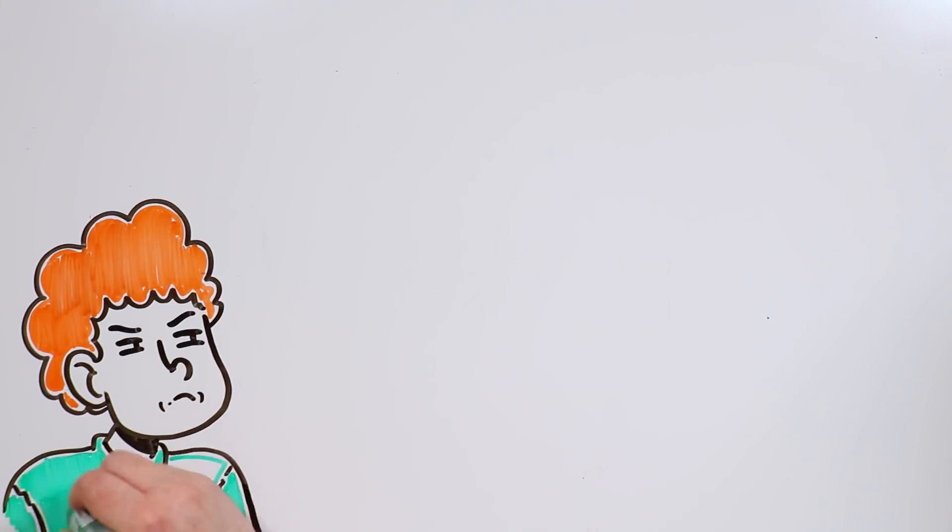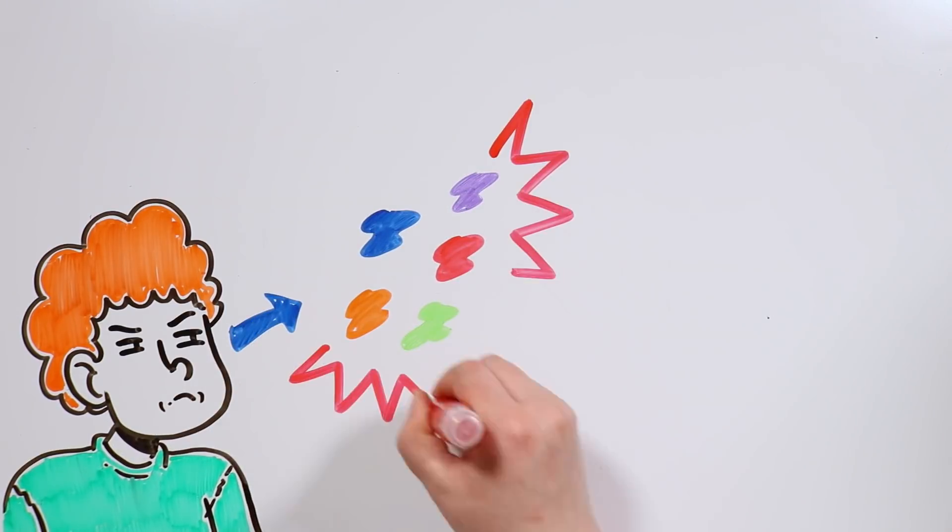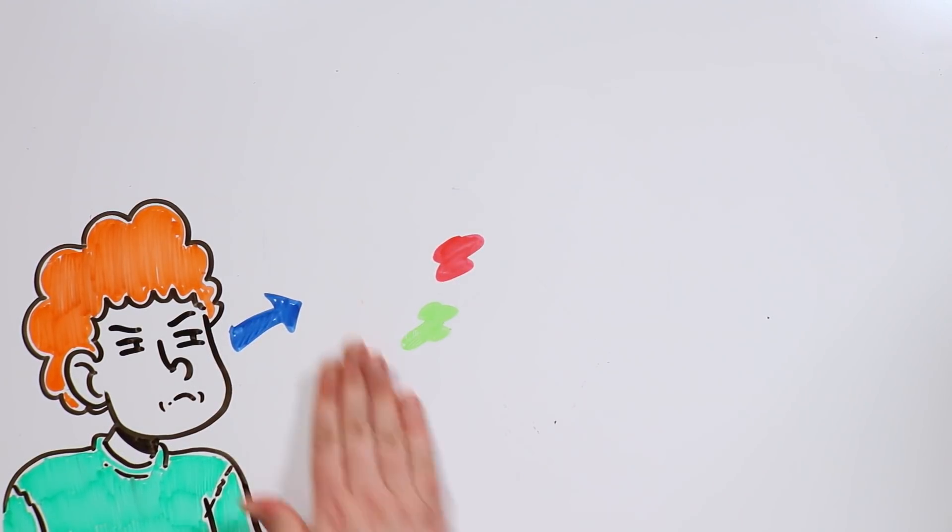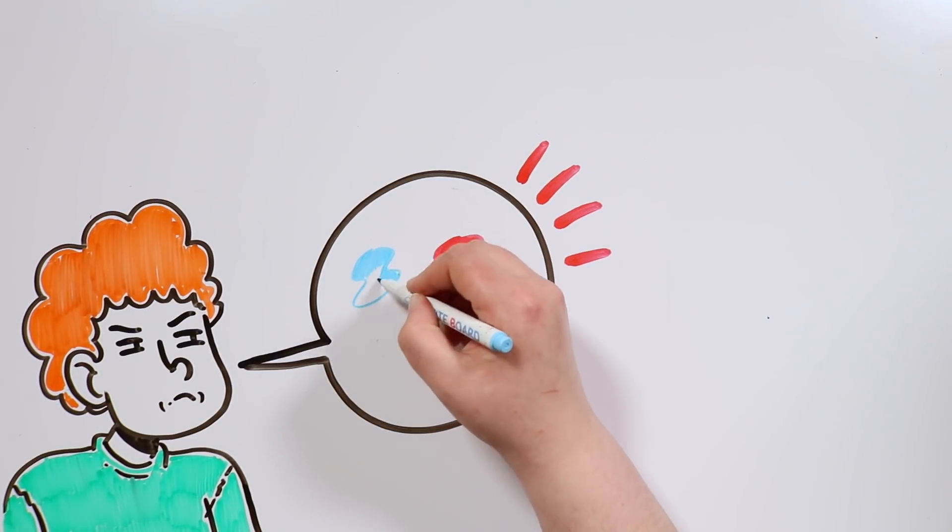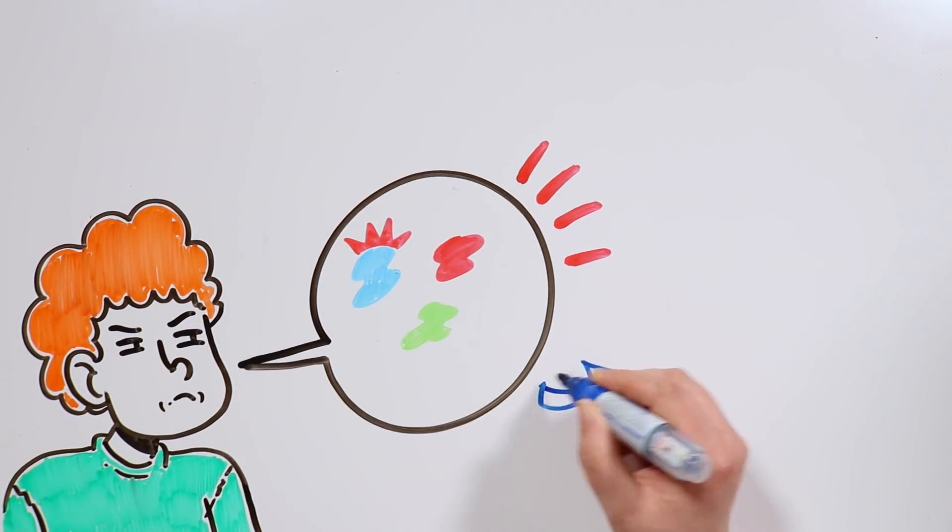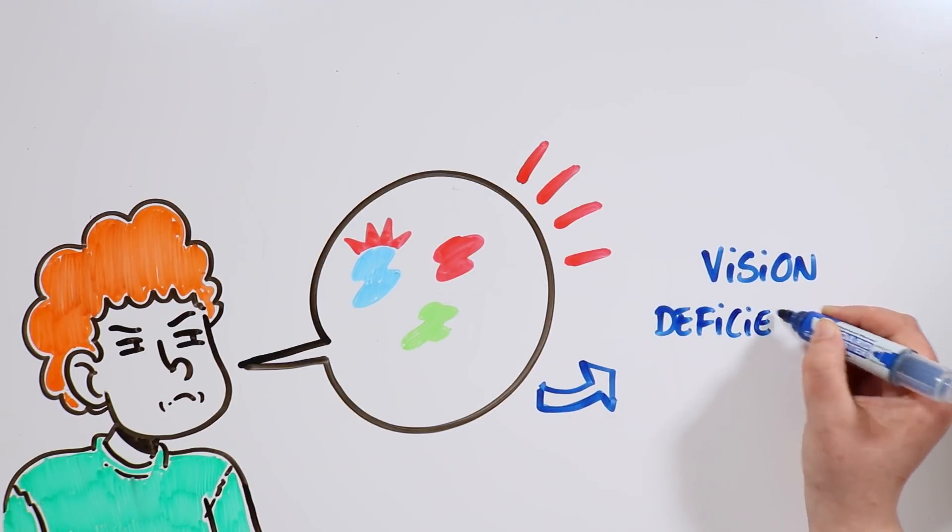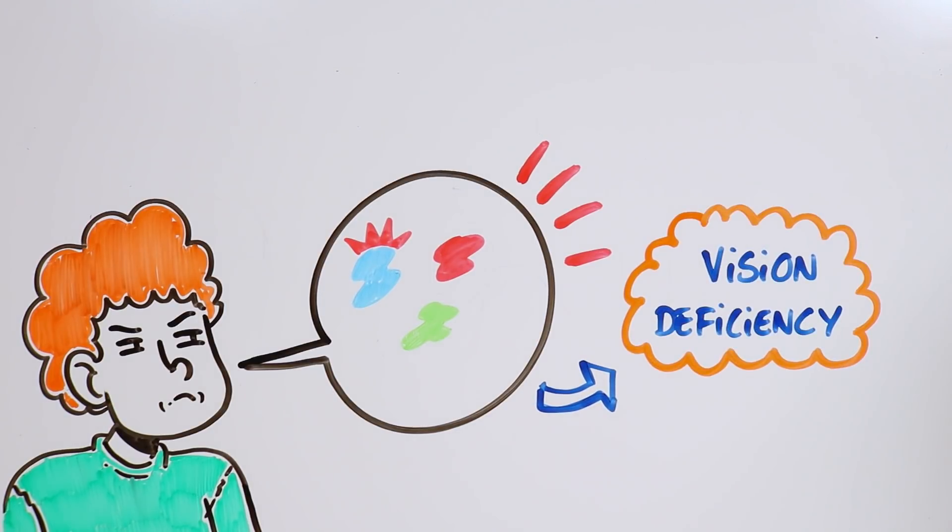Color blindness is the inability to see colors in a normal way. Most people who suffer from this condition struggle differentiating reds and greens, and frequently also blues. Because of this, this condition is also known as color vision deficiency.